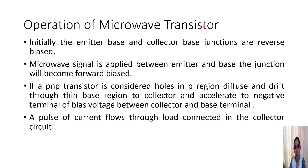Now the operation of a microwave transistor. Whether NPN or PNP, we can explain the working since we already know the basics. There will be emitter, base, and collector regions. Initially these are reverse biased, and when the microwave input signal is applied the emitter-base junction becomes forward biased. The working is described here for a PNP transistor, though NPN is the more common configuration.